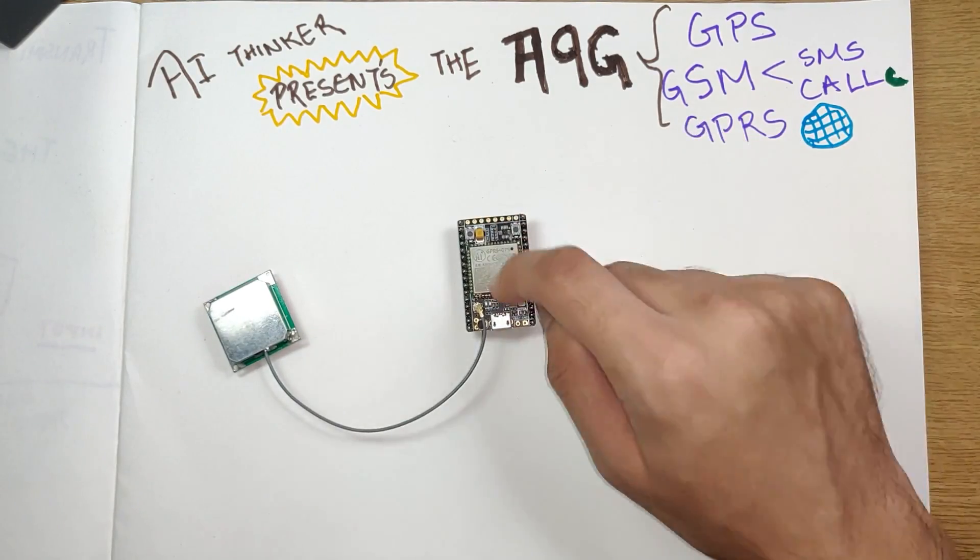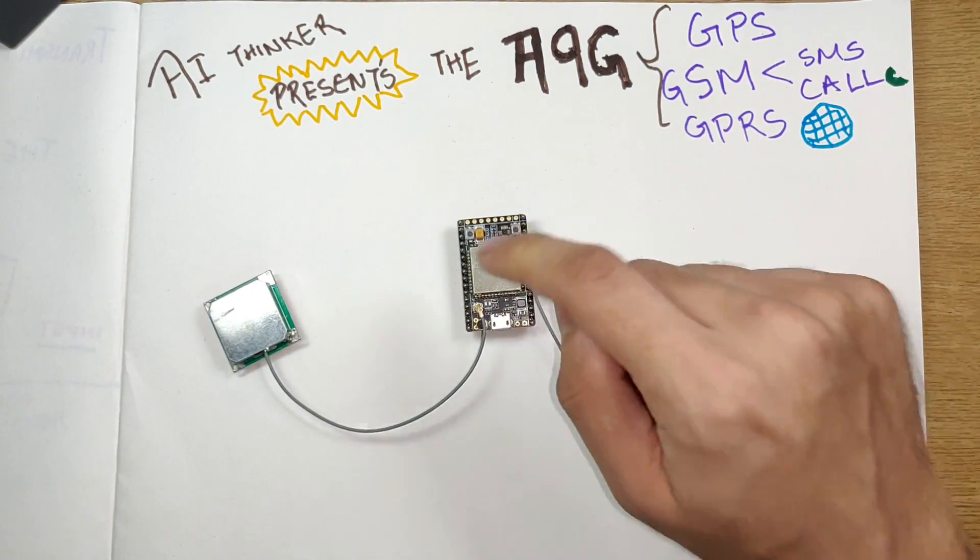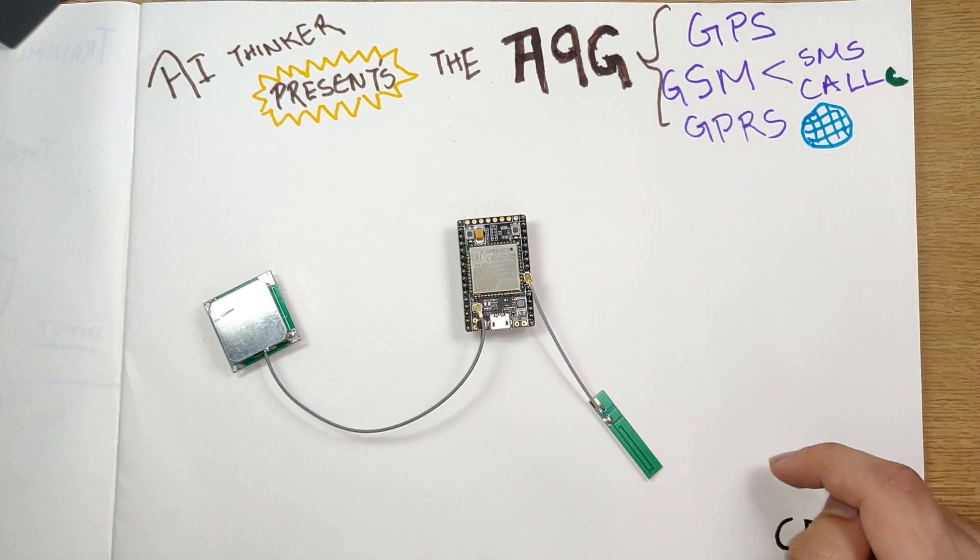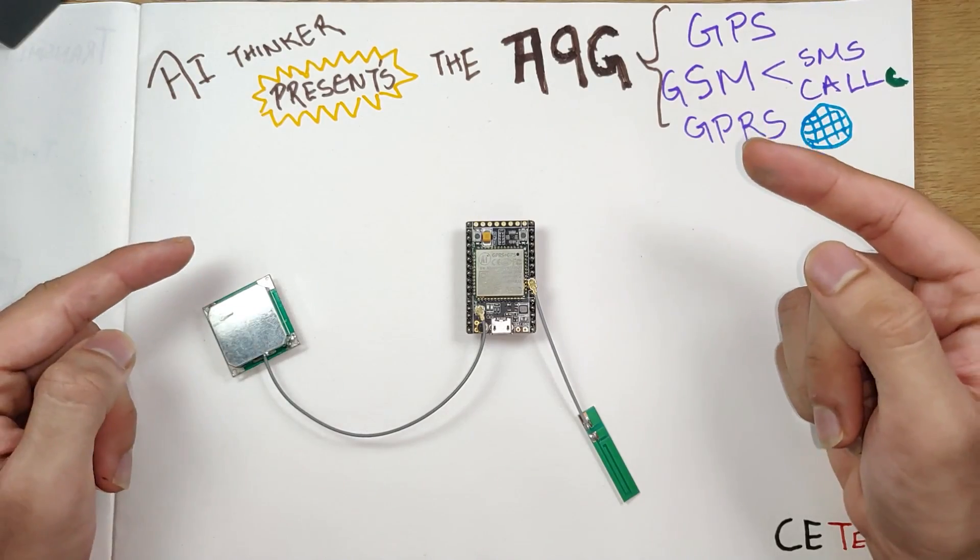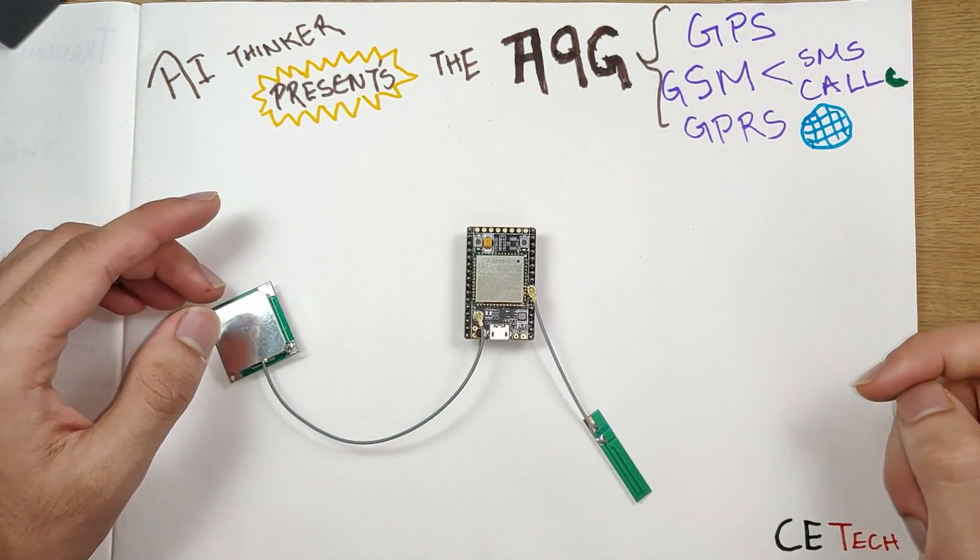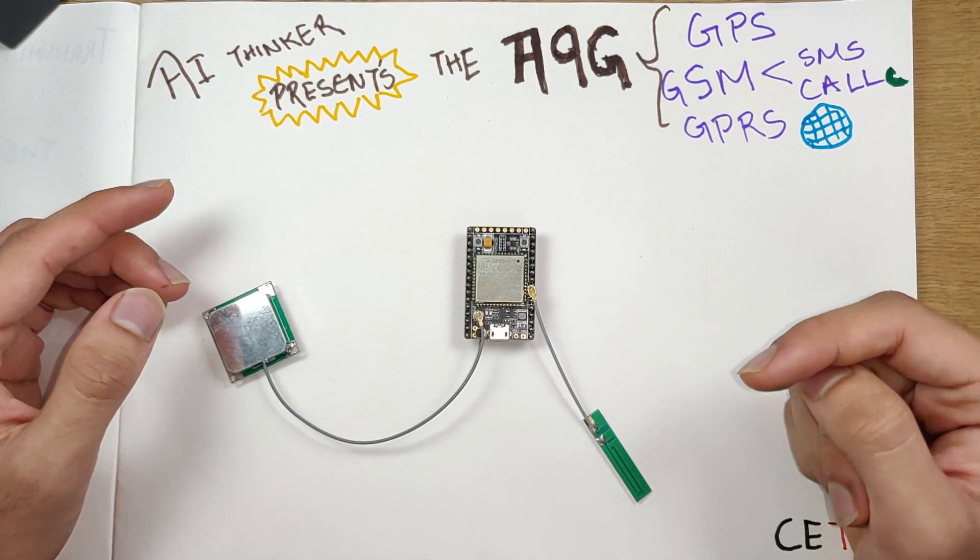This can be used for TCP, UDP, IP servers as well as HTTP servers to transmit or ping any particular server. That is what we are going to look at today - how to use the AT commands for GSM, GPRS, and GPS. If you're interested in learning how we can make this module work, then stay tuned to the video.